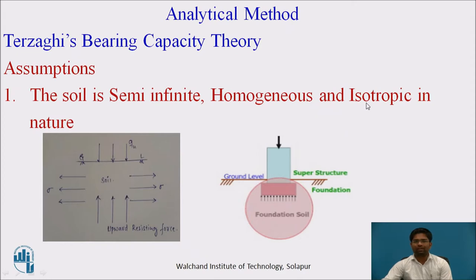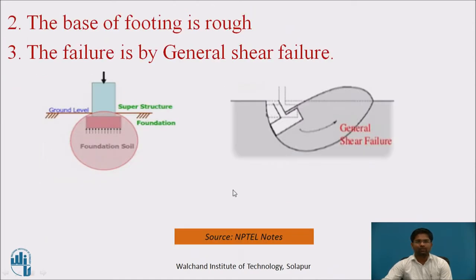Isotropic means the properties of the soil sample and the stress induced are the same in both the X and Y directions. The second assumption is that the base of the footing is rough — Terzaghi assumed the base of the footing is rough.